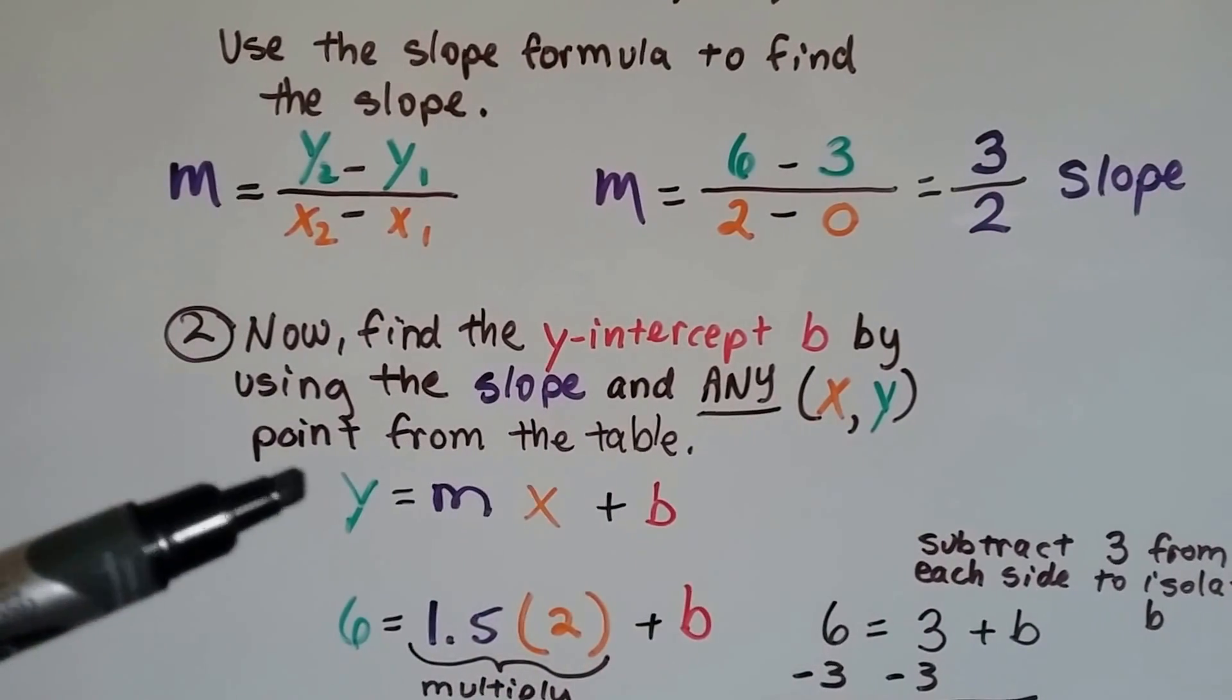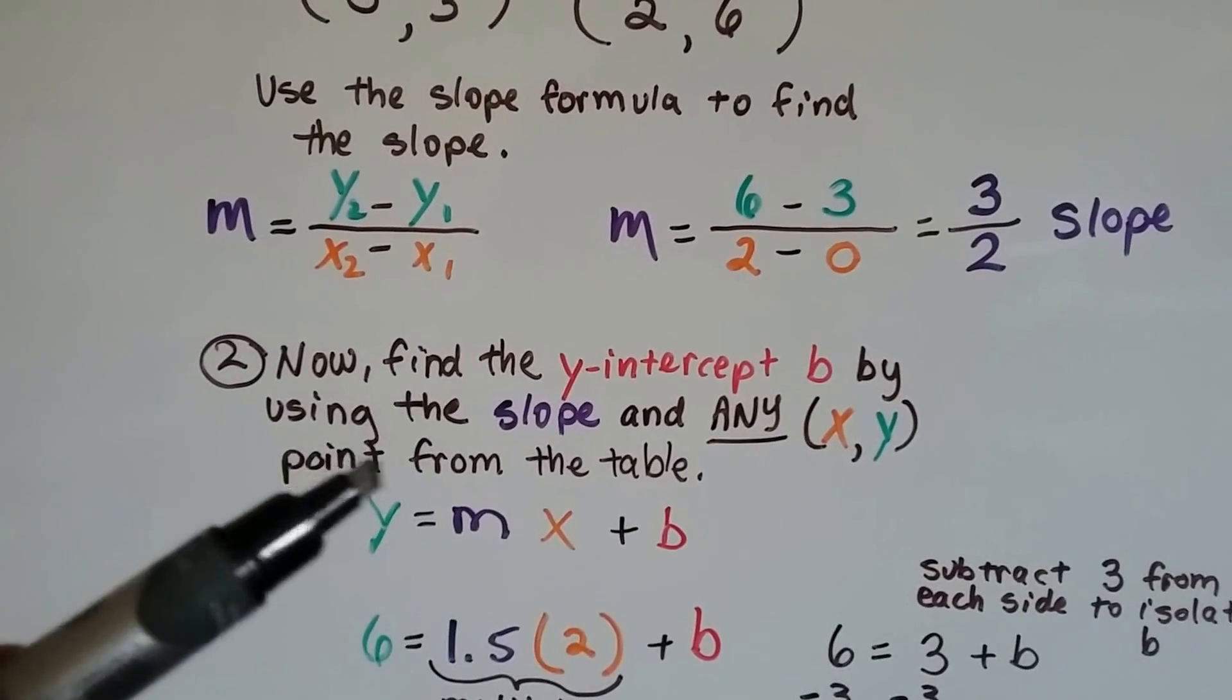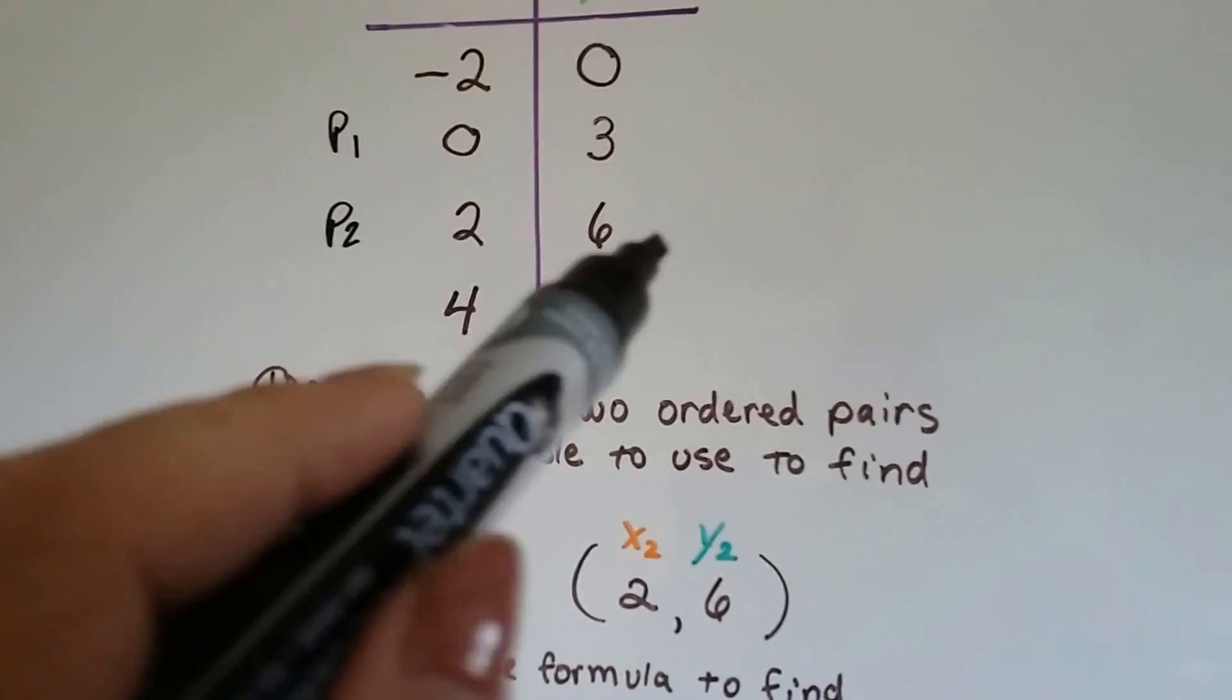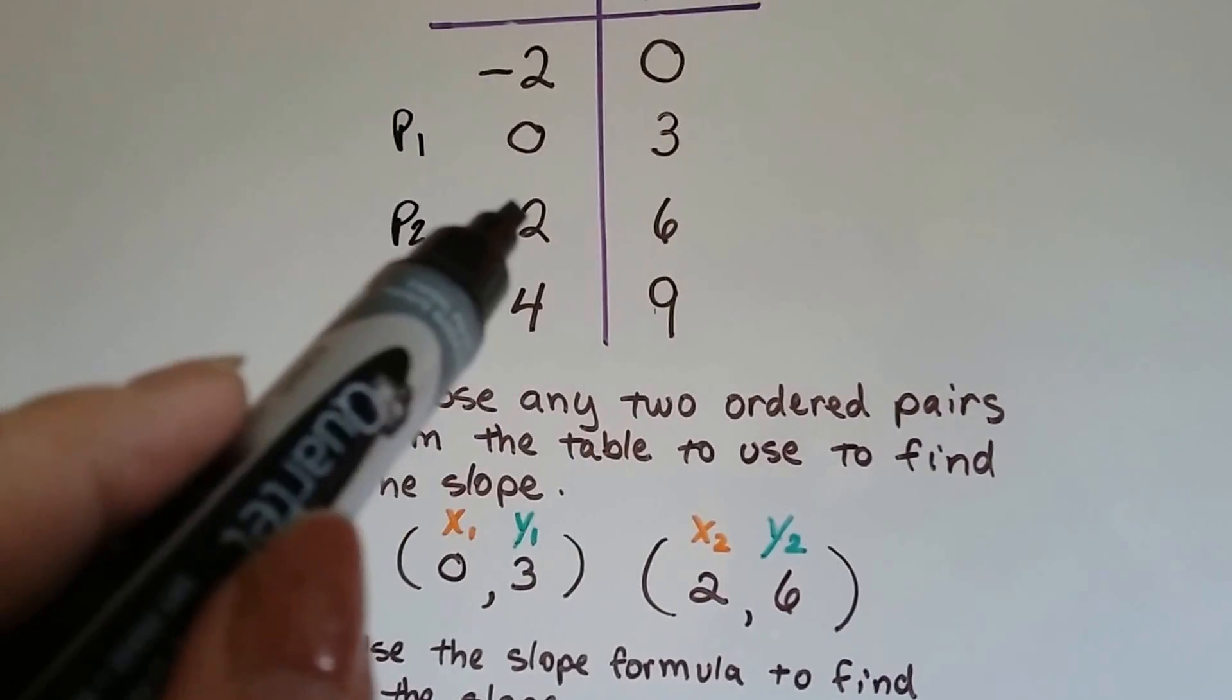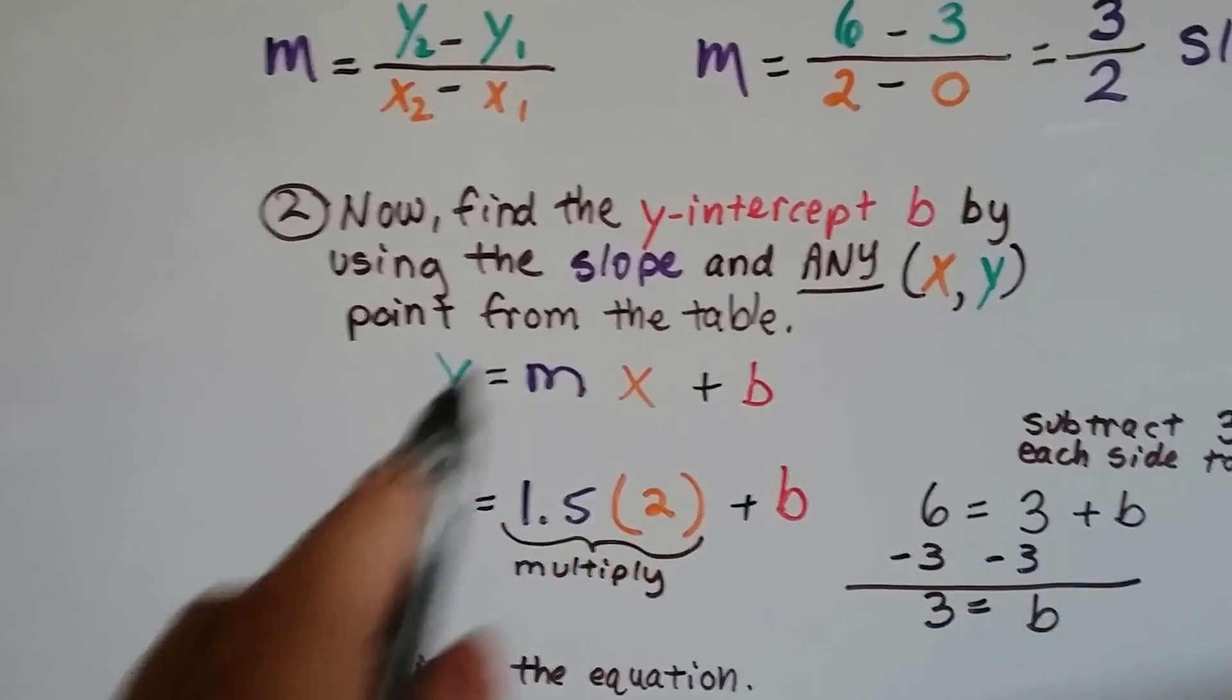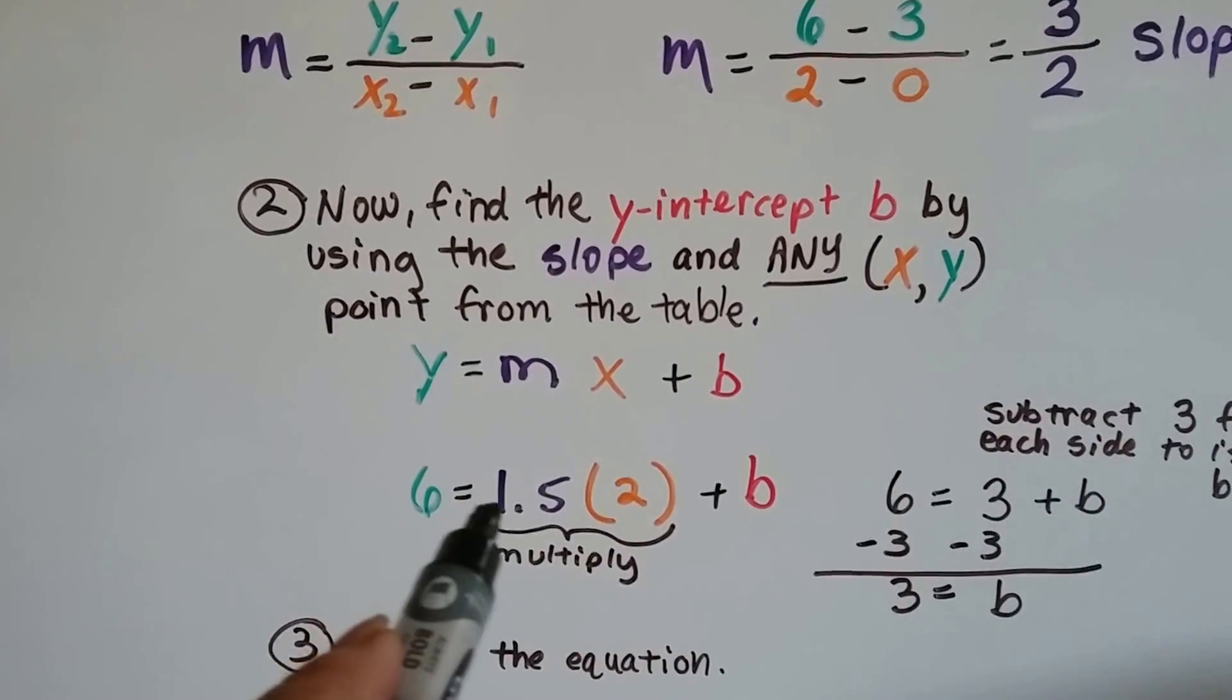So now we need to find that y-intercept b by using this slope and any xy pair from this table. So I chose the 2 and the 6, because I figured 2 is easy to multiply by, right? So x is 2, y is 6. And I plug that into our slope-intercept form of an equation with our 1.5 slope.